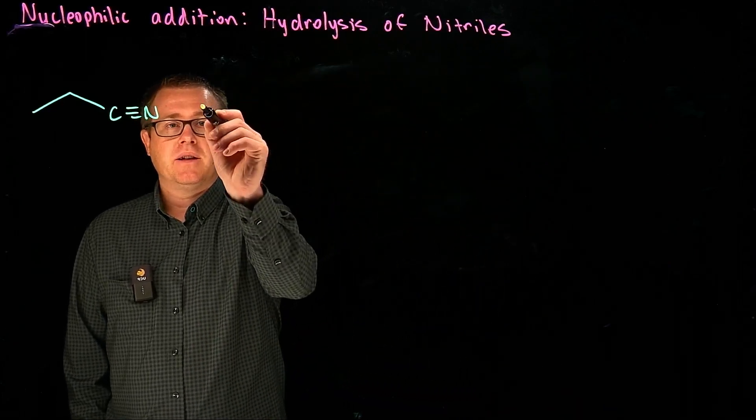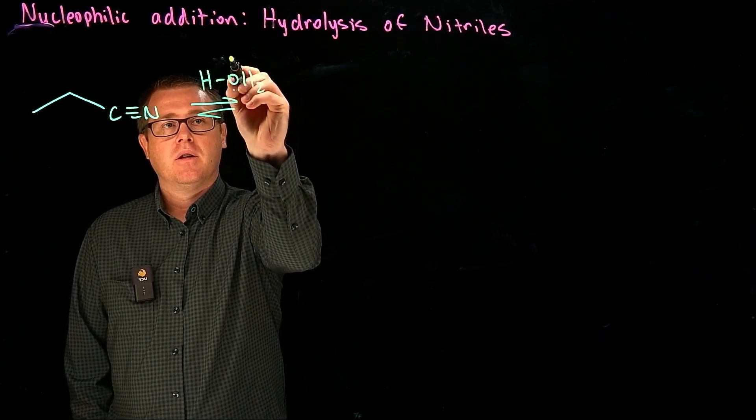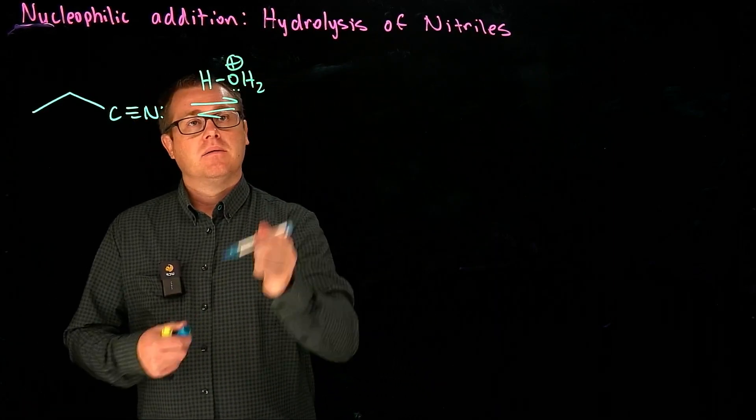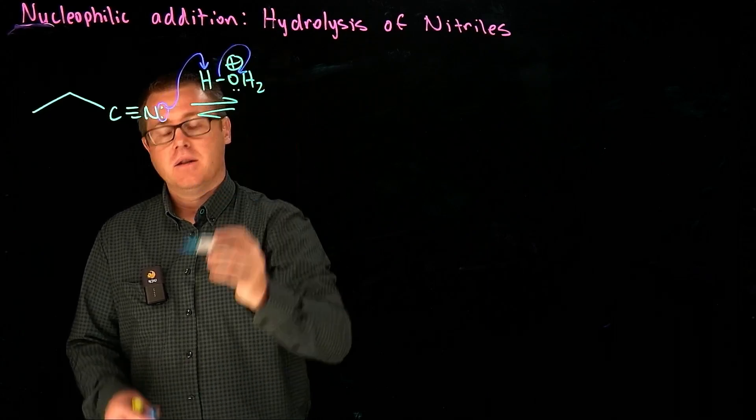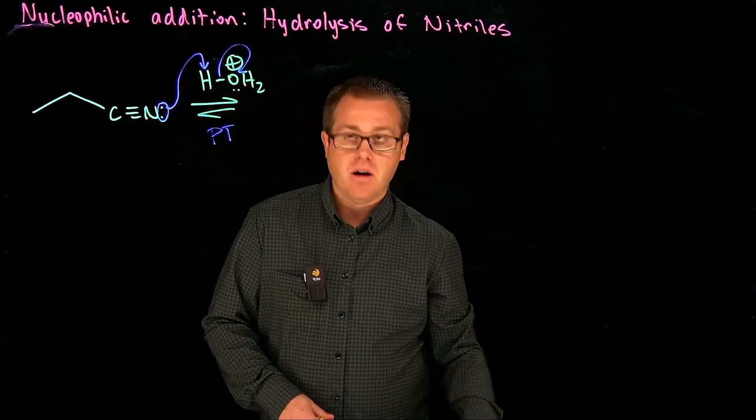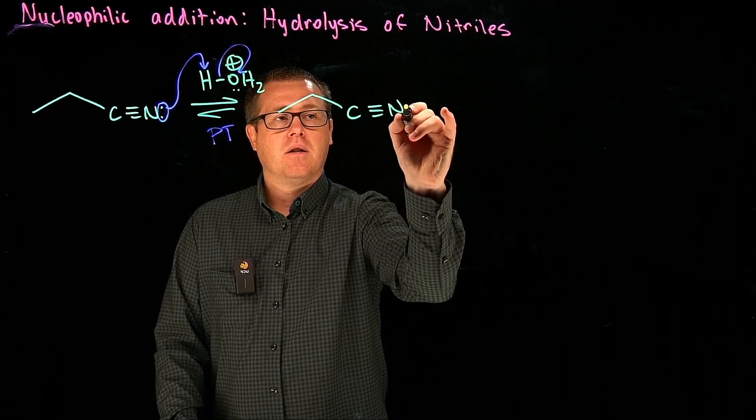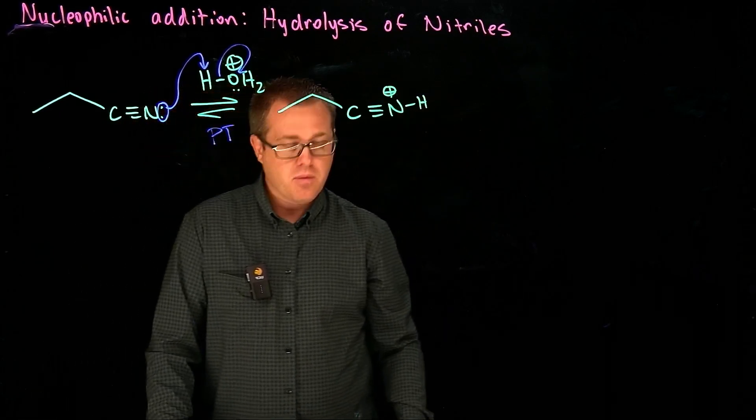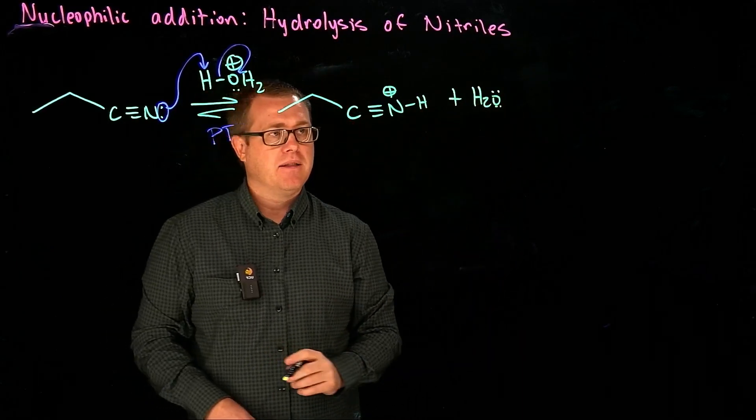So when you take water and put it into sulfuric acid, what happens? That generates our hydronium. So we have hydronium, we have a nitrile, and that's going to be a simple what? A simple proton transfer. So what do we get? We have a nitrogen atom there with four bonds. And we've also generated some water from that first step right there.